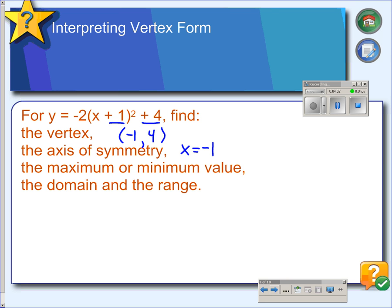The maximum or minimum value will occur at the vertex. And the minimum value, in this case, it is actually a maximum value because our a value here is negative. So it's going to be a maximum value, and it is the y value. So our maximum value is y equals 4.